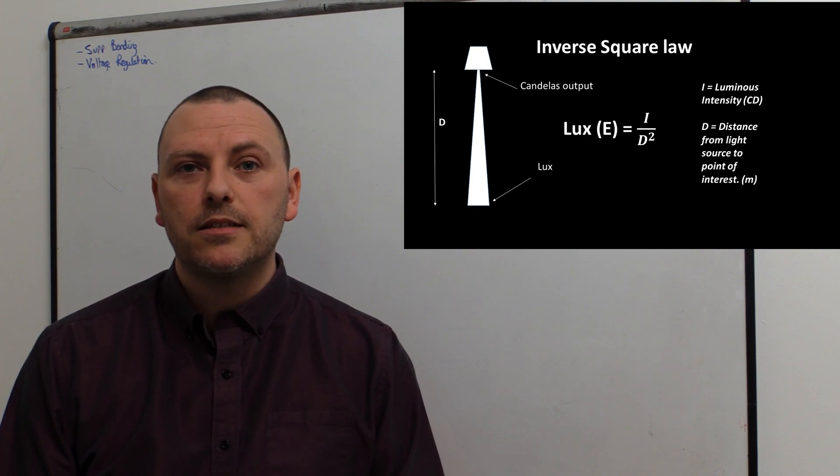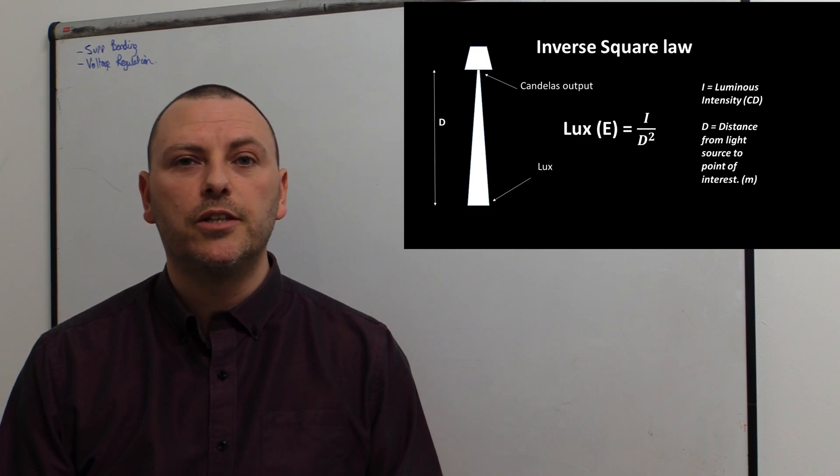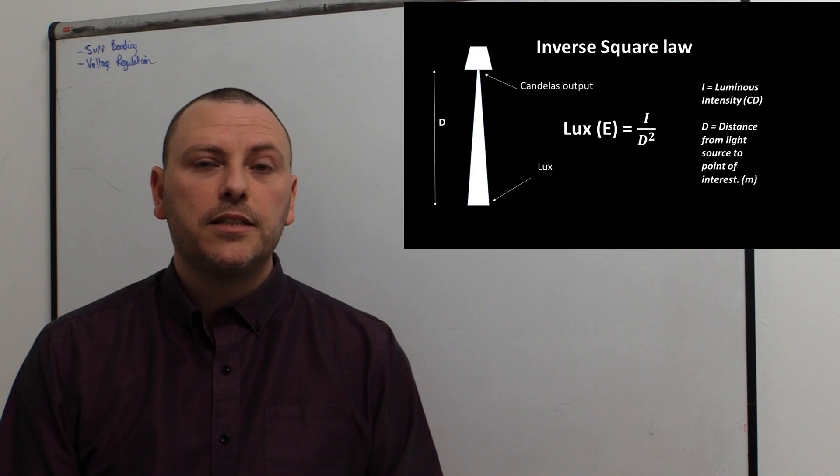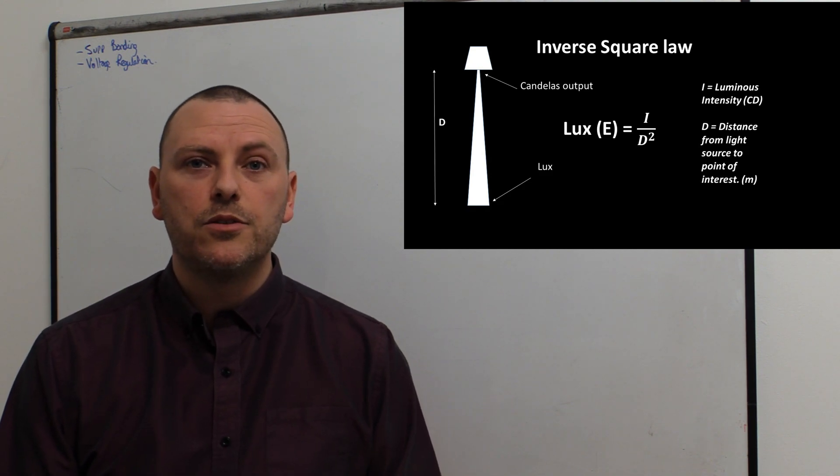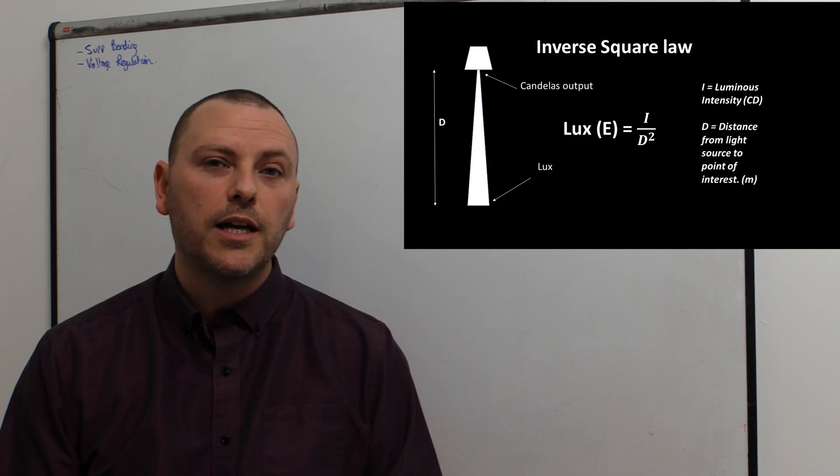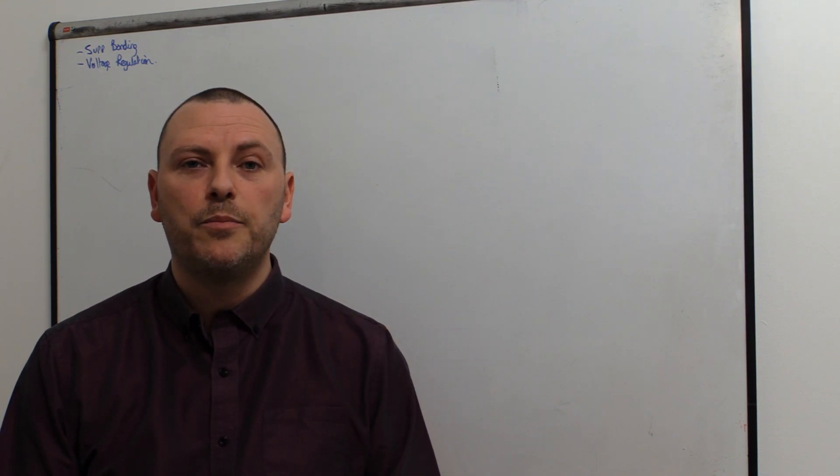Now as you can see that is D squared and that gives you an indication of how this works. If we double that distance we're going to quadruple the surface area of light, and so the more distant you become from the light source the more that light spreads out and the dimmer our surface will appear.